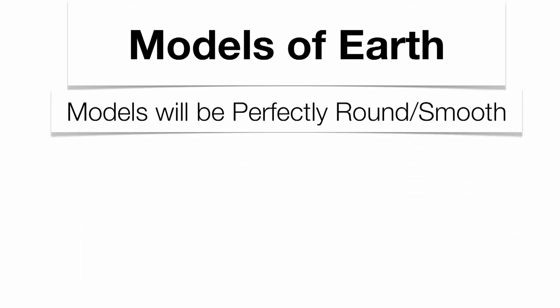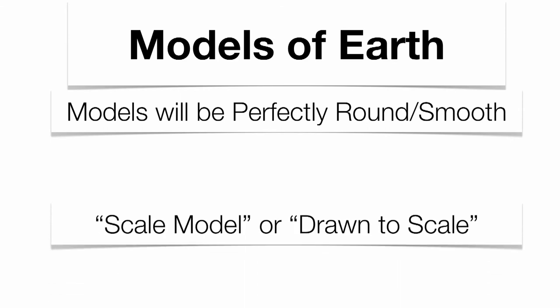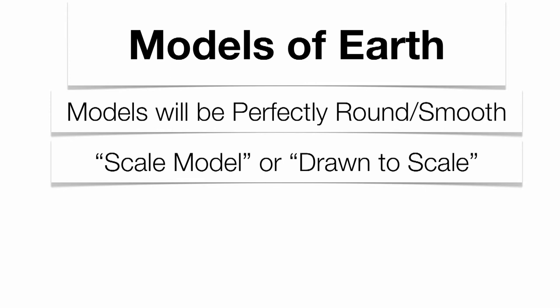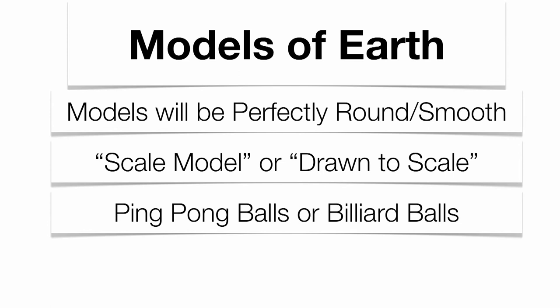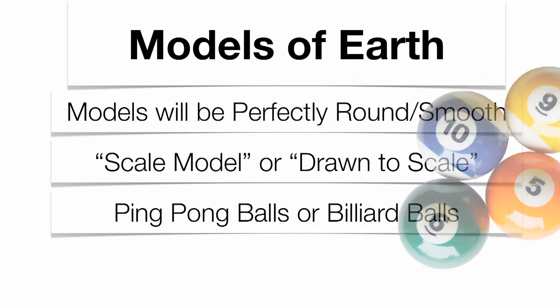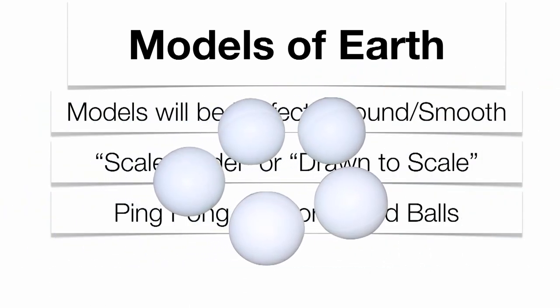Certain models we use are perfectly round and perfectly smooth — think of any object that's perfectly round and smooth. We go by the idea of something drawn to scale, or a scale model. A ping pong ball or a billiard ball are really good examples of scale models of the Earth. If you blow them up to the size of the Earth, they'd still look perfectly round and smooth. In a photograph of the Earth, you don't really see the high mountains or the low trenches — it looks perfectly round and smooth. Billiard balls and ping pong balls are two examples that tend to pop up on the Regents exam.